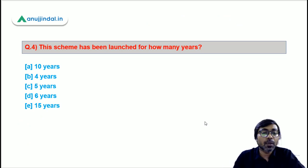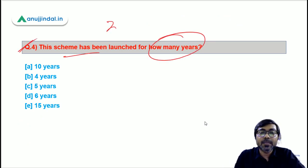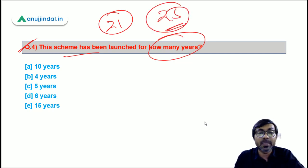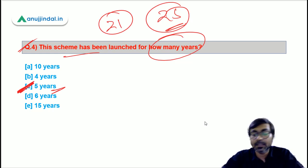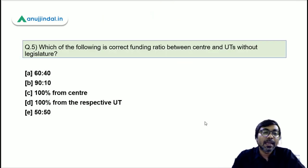Question 4: This scheme has been launched for how many years? The scheme runs from Financial Year 2021 to Financial Year 2025 — a period of five years. Option C — five years — is the correct answer.